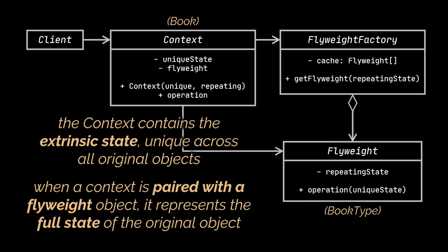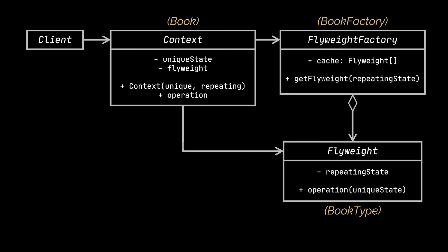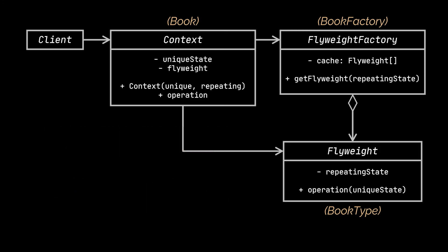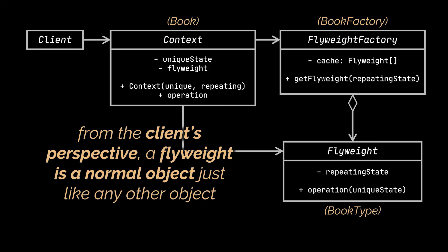When a context is paired with one of the flyweight objects, it represents the full state of the original object. To create the flyweights, we need the flyweight factory — this class manages a pool of existing flyweights. With the factory, clients don't create flyweights directly; instead they call the factory, which looks over previously created flyweights and either returns an existing one matching the search criteria or creates a new one if nothing is found. From the client's perspective, a flyweight is a normal object — it can be configured at runtime as it is part of the context.